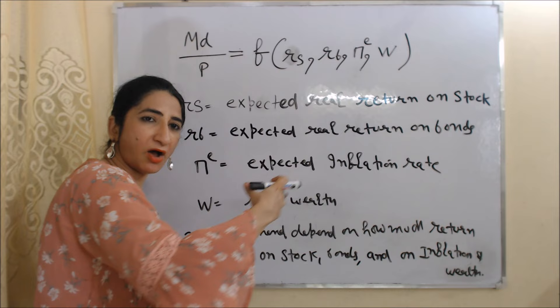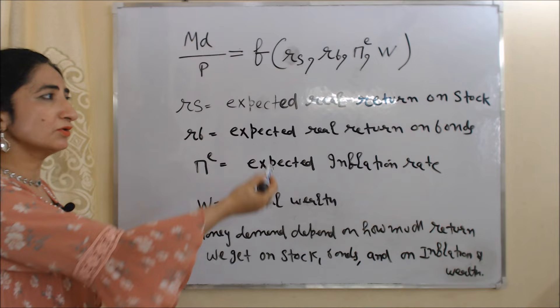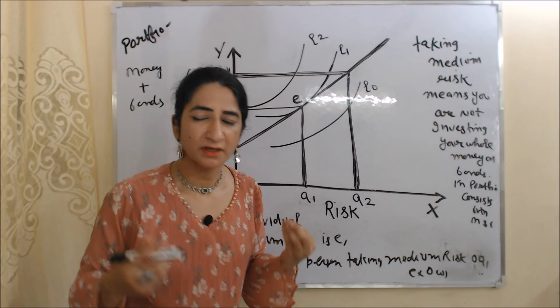The last variable is W, which is real wealth. So according to this theory, real money demand depends on how much return we get on the stock market and on bonds, what the inflation rate will be, and our real wealth.